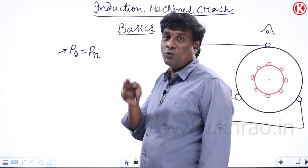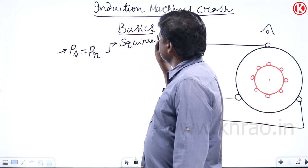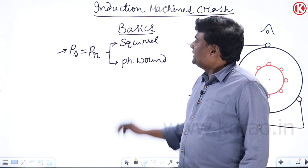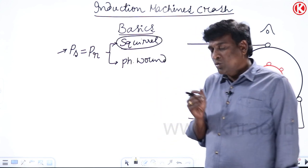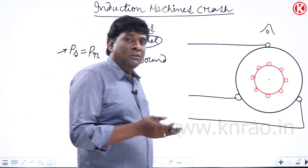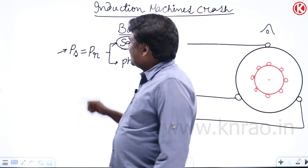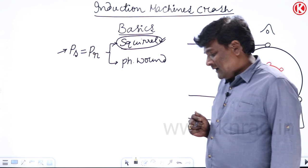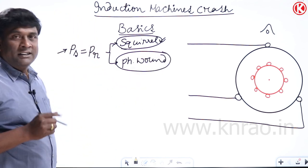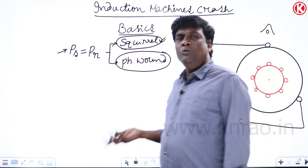In induction machines there are two types of rotors: squirrel cage rotor and phase wound rotor (slip ring rotor). A squirrel cage rotor can be used for any number of stator poles — two pole, four pole, or six pole — because it automatically produces the required poles. For phase wound rotor, you must intentionally design the rotor so that stator and rotor pole numbers are the same.